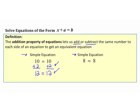Let's look at subtraction with another simple equation. Starting with 8 equals 8: I can subtract 5 from this side, and as long as I subtract 5 from the other side, I'll end up with a true statement. 8 minus 5 is 3, and 8 minus 5 is 3. As long as I do addition or subtraction to both sides of an equation, I still end up with a true statement.